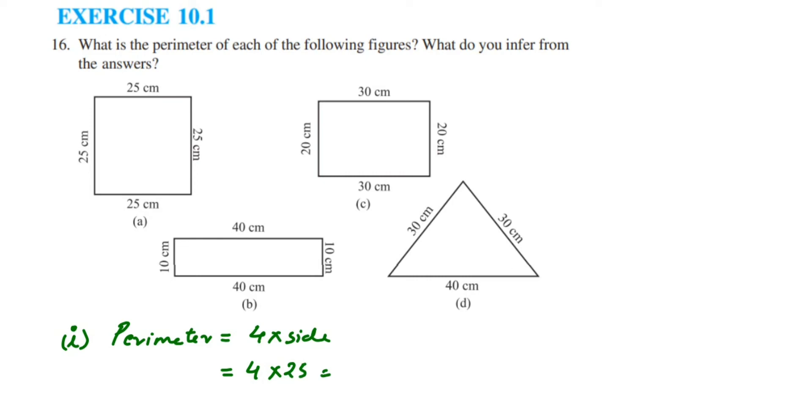The second one is a rectangle, so perimeter equals 2 times (L plus B), which is 2 times (30 plus 20). 30 plus 20 is 50, so 2 times 50 equals 100 centimeters.